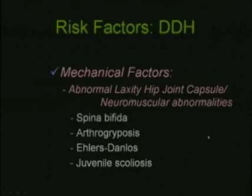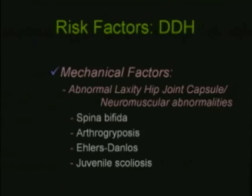Other mechanical factors include neuromuscular abnormalities: babies with spina bifida who have considerable spasticity, babies with arthrogryposis, and conversely, babies with Ehlers-Danlos syndrome who have quite a bit of laxity of the hips. There is also said to be a higher incidence of DDH in babies with juvenile scoliosis.